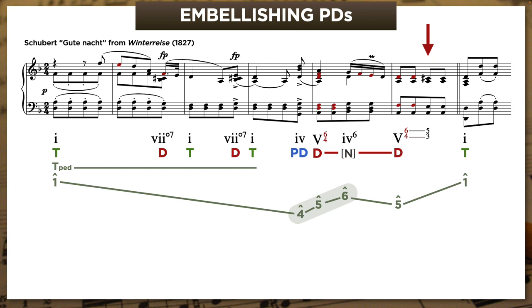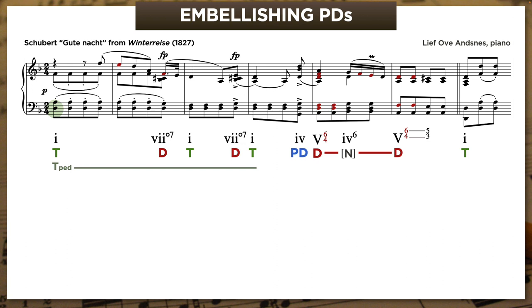Now, before we listen to the whole thing, remember the key point here. In this piece—and the next one as well—the backtracking PD arrives after the cadential dominant, which it always does, but before the actual cadence.